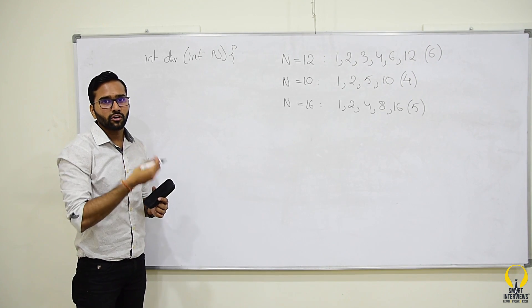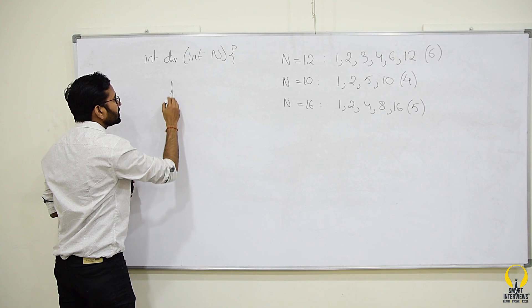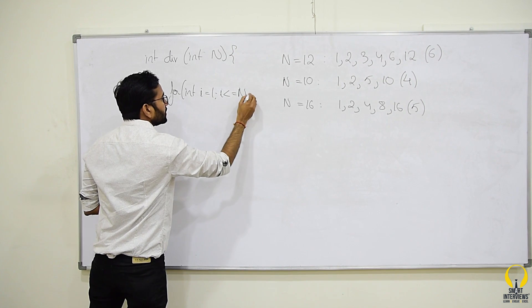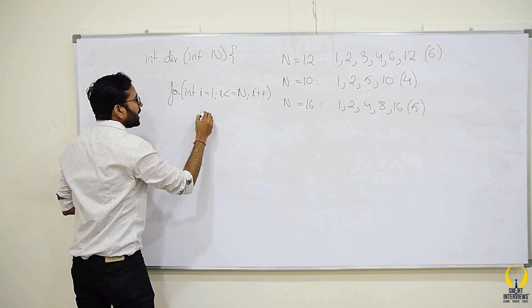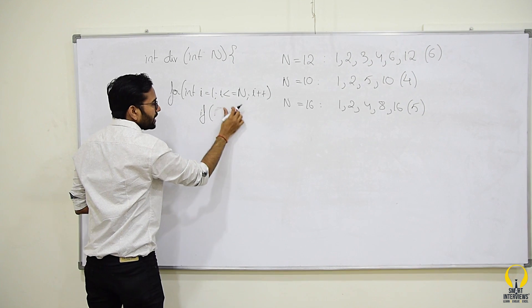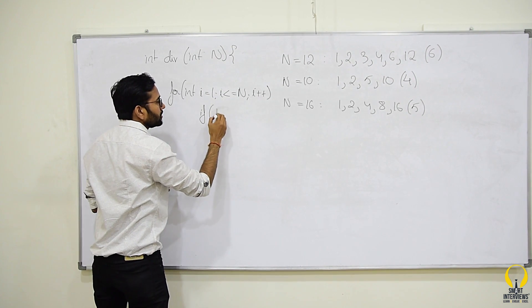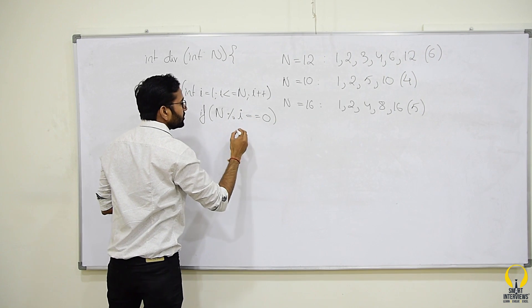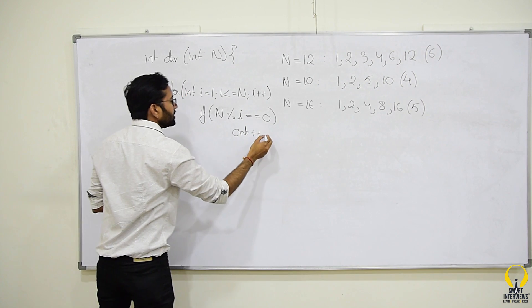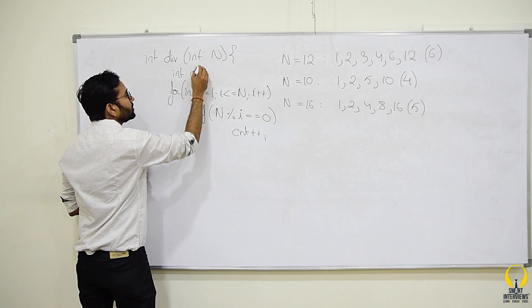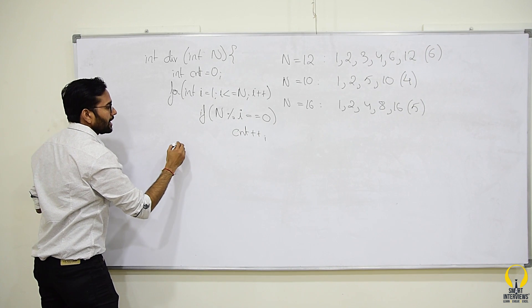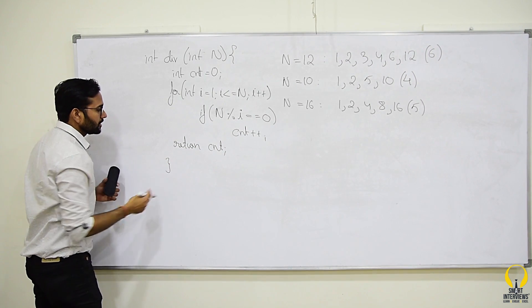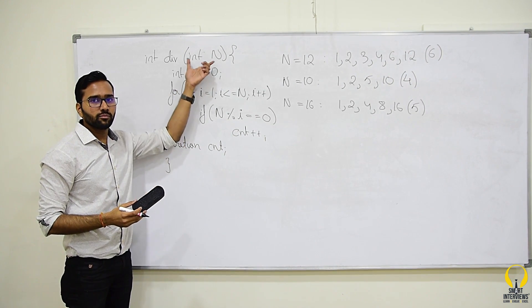So, how will you solve this problem? You will simply run a loop from 1 to n and you will check that if i is a divisor of n. How you do that? The remainder should be 0. So, n mod i, if it is 0, you will do count++. Initially, you will take count equal to 0 and after that at the end, you can simply return count. This is a simple approach to solve the problem at hand.